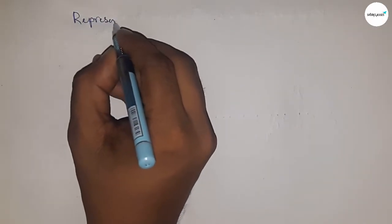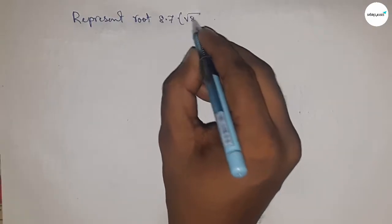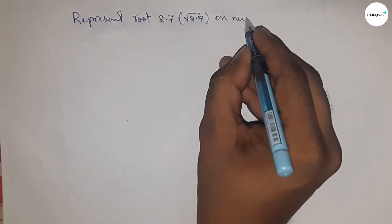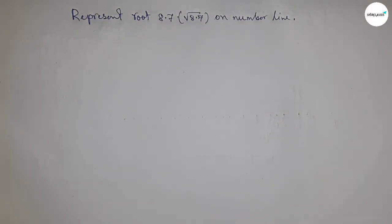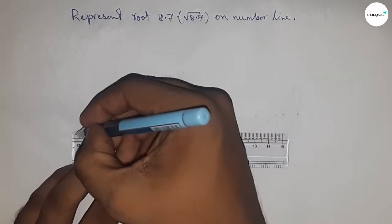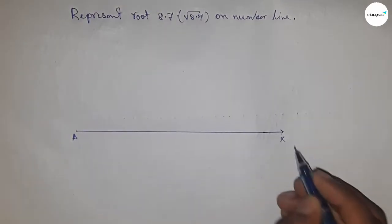Hi everyone, welcome to Accessory Classes. Today we're talking about how to represent root 8.7 on a number line. Let's start by first drawing a line of any length, this is line AX.